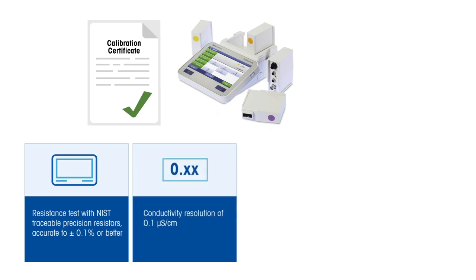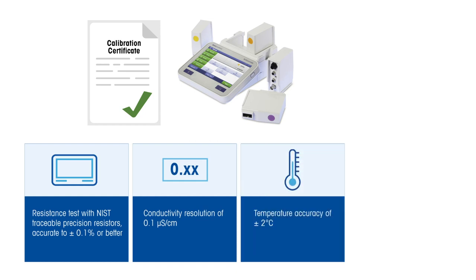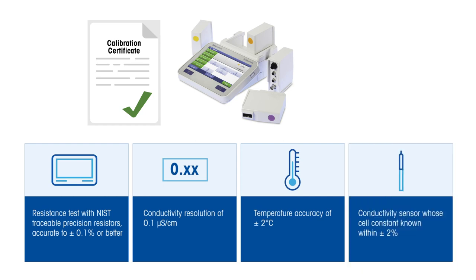Additionally, the measurement system should have a conductivity resolution of 0.1 microsiemens per centimeter or better, and a temperature accuracy of plus or minus 2 degrees Celsius. The conductivity sensor used must have a cell constant known within plus or minus 2%.